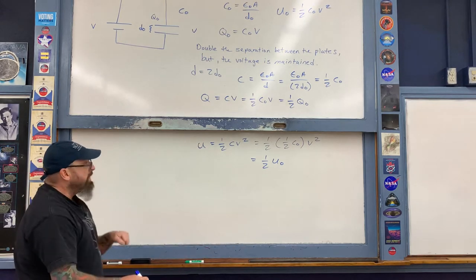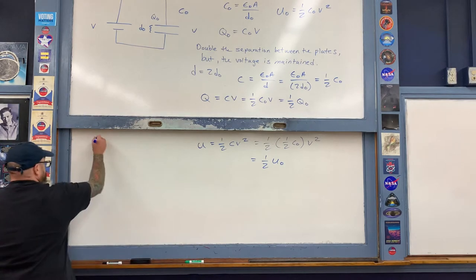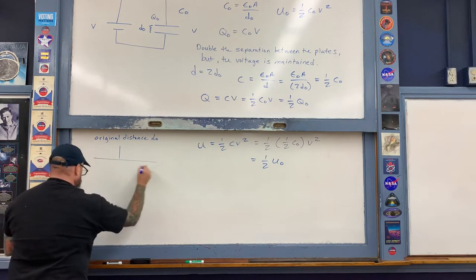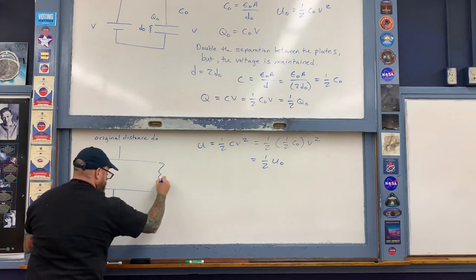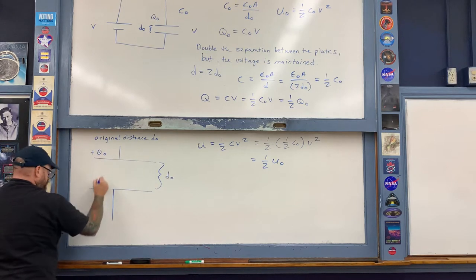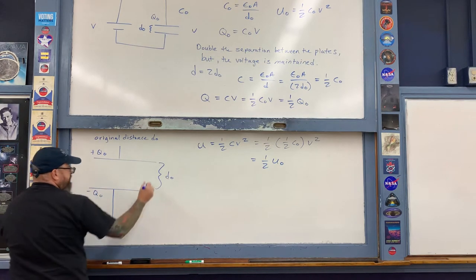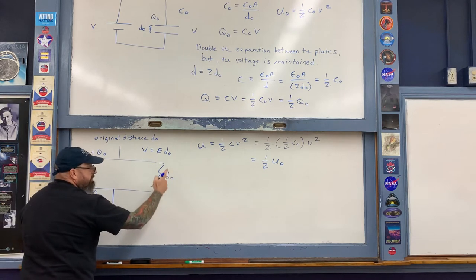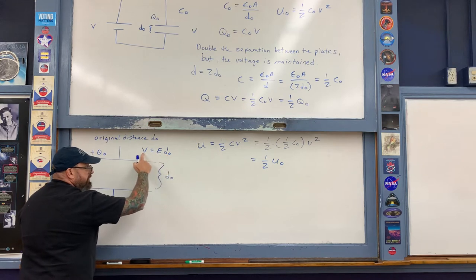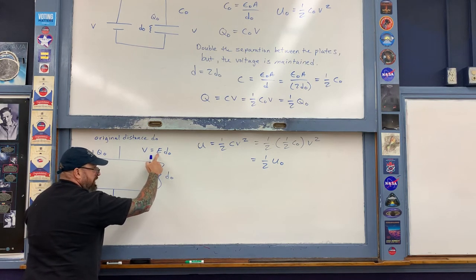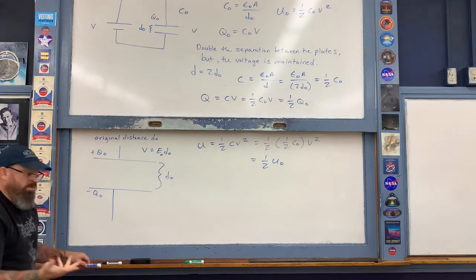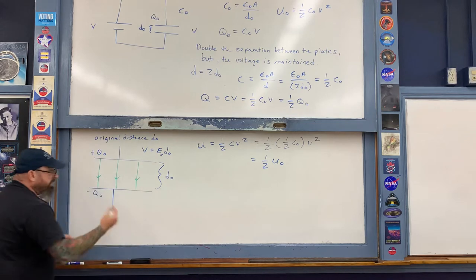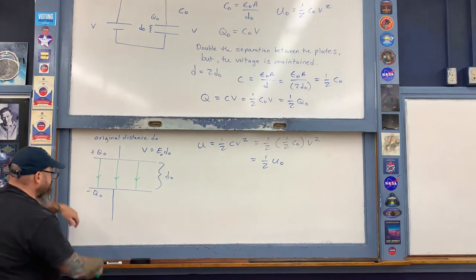What happens to the electric field? Consider the top board before we separate the plates. The original capacitor has plate separation D₀, charge Q₀, and voltage V = E₀·D₀. Since we're about to double the plate separation, the electric field will have to change to maintain the same voltage — label that initial field E₀.